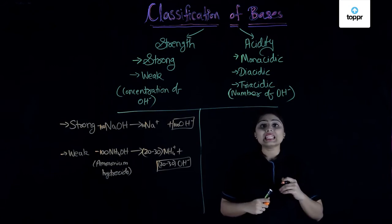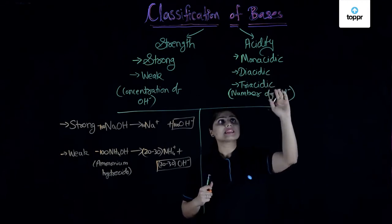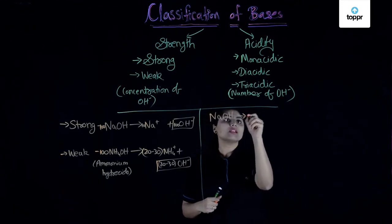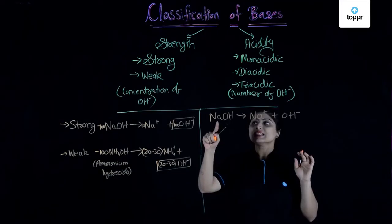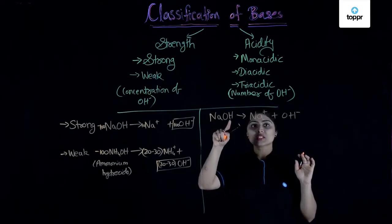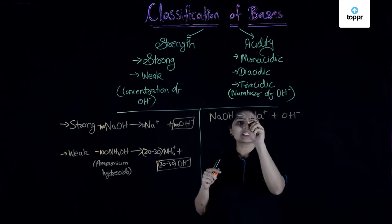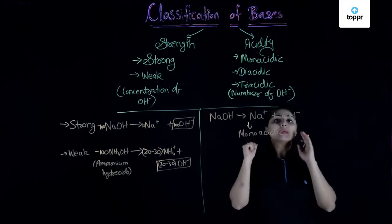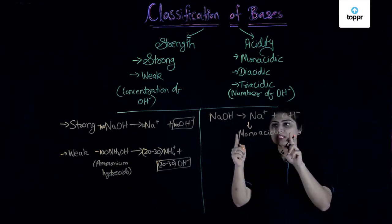Now let's talk about the acidity of bases — how bases are classified as monoacidic, diacidic, and triacidic. If we take NaOH, it forms Na+ and OH- in water. In this one molecule, only one OH is present, so it will form only one OH-. For an acid to neutralize this base, it has to neutralize only one OH-, so NaOH is a monoacidic base.